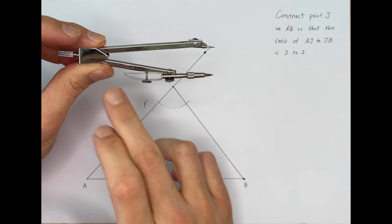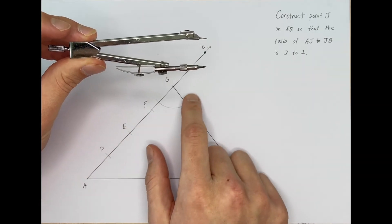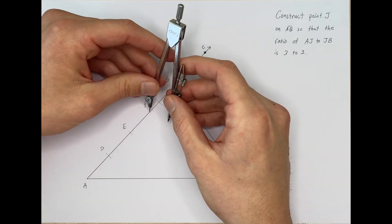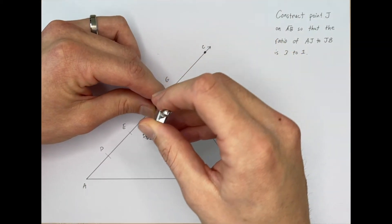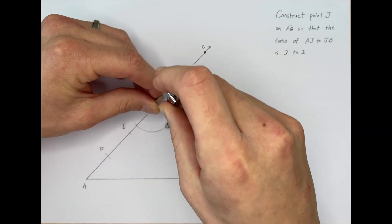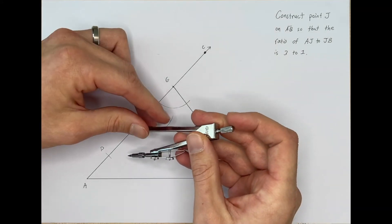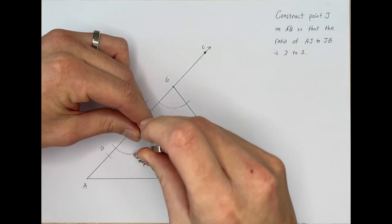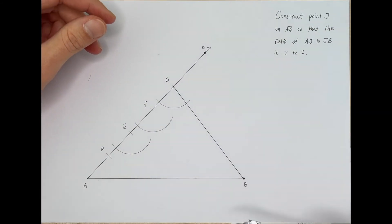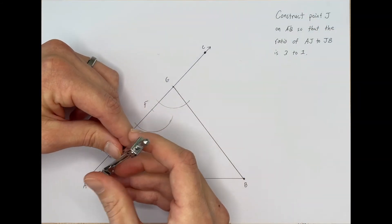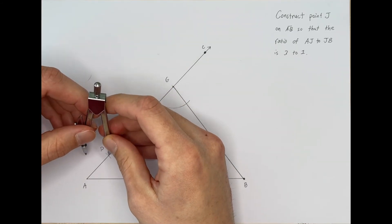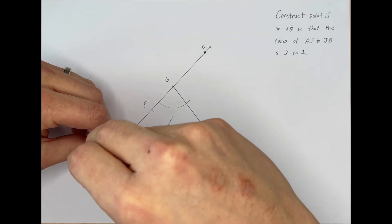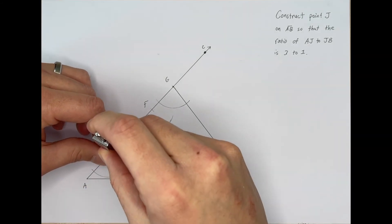Keeping the compass open the same amount, we put the needle on F and draw this arc. Now the same thing for E — put the needle on E and draw our arc. And one more time for D — put the needle on D and draw our arc going this way.